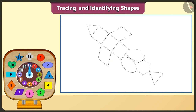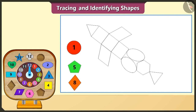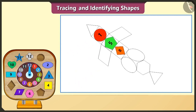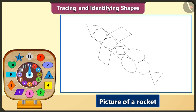Now look at these blocks — this is a circle, this is a pentagon and this is a rhombus. We will place these blocks in the three traced square shapes and trace them. Oh wow! This is a picture of a rocket! If we want to show this rocket flying in the sky, which shape would we have to trace? To show the rocket flying in the sky, we would have to trace the star-shaped block. So now we will trace the star-shaped blocks and draw one, two, three, four and five stars.